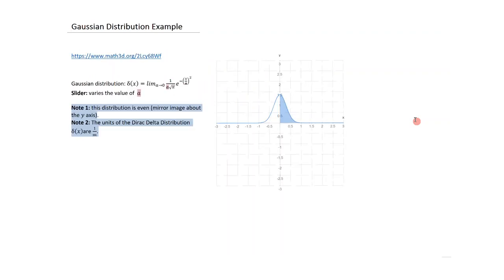Here is an example of a Dirac delta distribution — in this case, a Gaussian distribution. There are an infinite number of possibilities and combinations available; you choose the one that serves your purpose, usually for the sake of making calculations easy. The Gaussian distribution delta of x has the form: the limit as a goes to zero of 1 over a times the square root of pi, times e to the minus x over a squared.